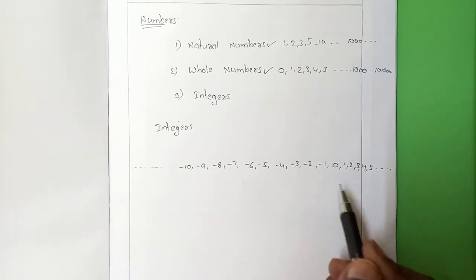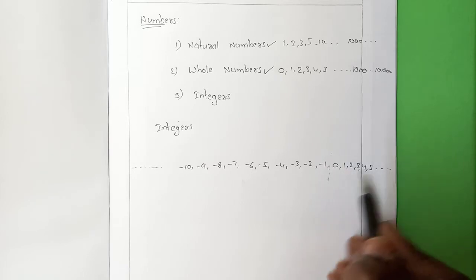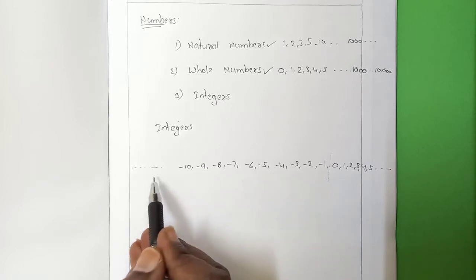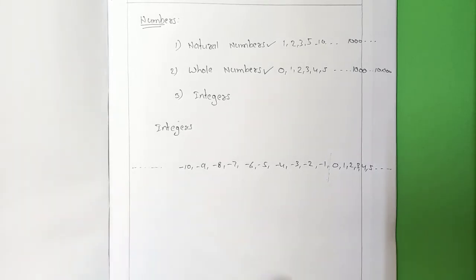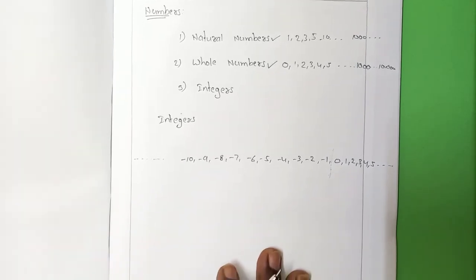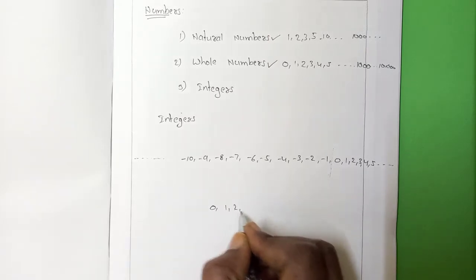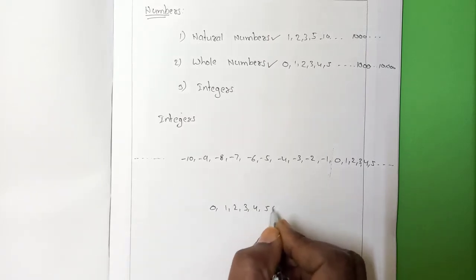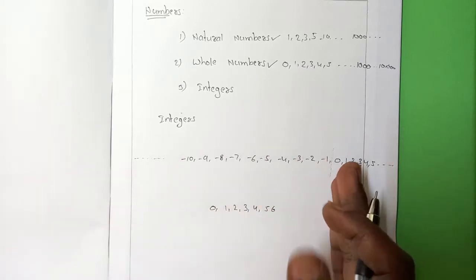From 0 onwards we are calling it as a whole number. And integers contain negative numbers also. You may get a doubt: after 0, we are writing 1, 2, 3, 4, 5, 6 and so on — from left to right we are going.